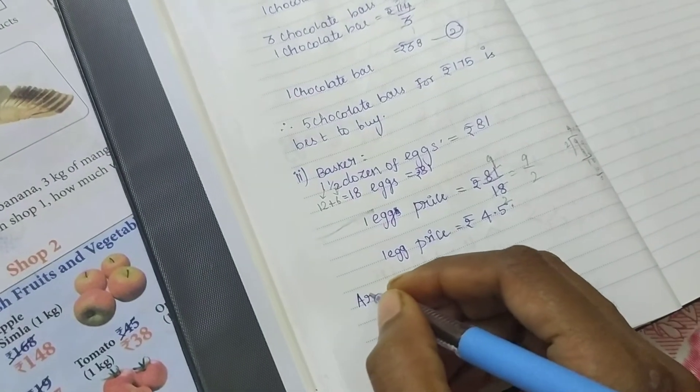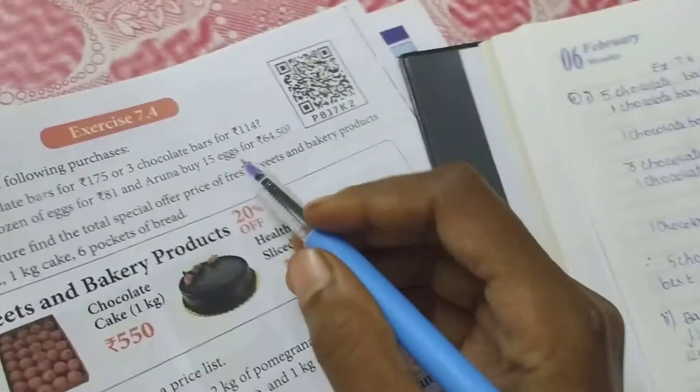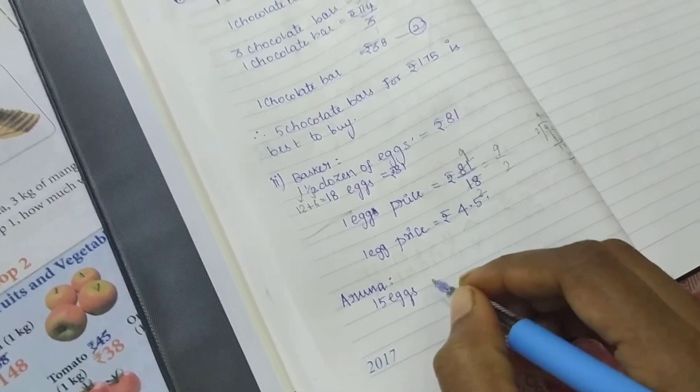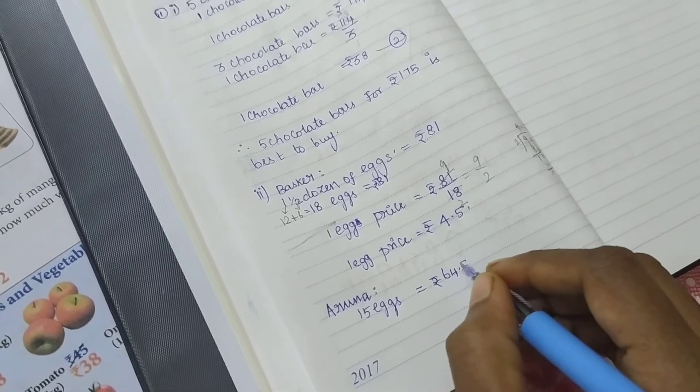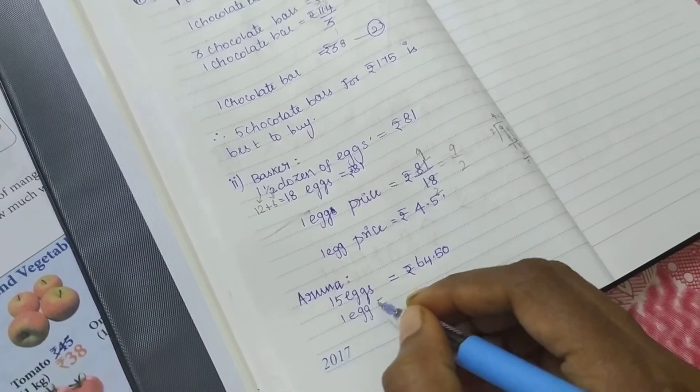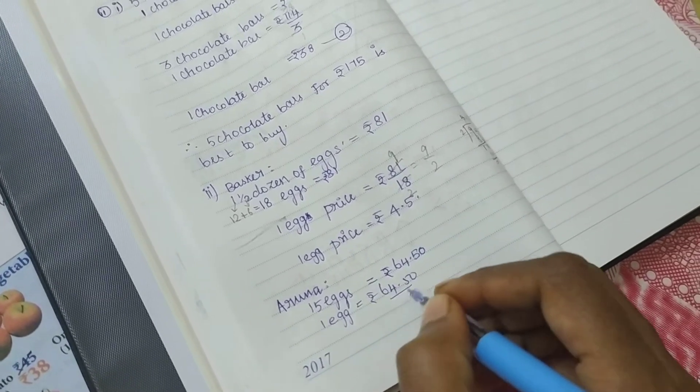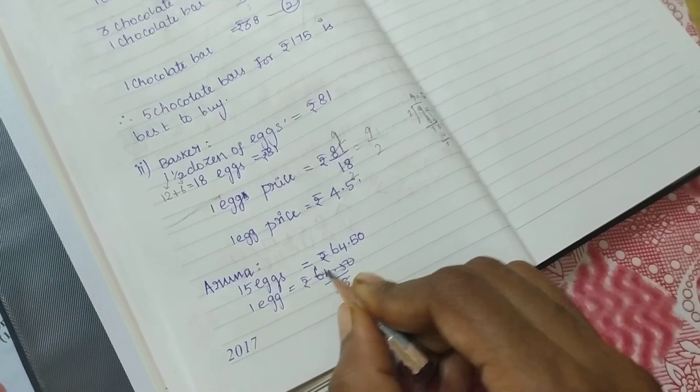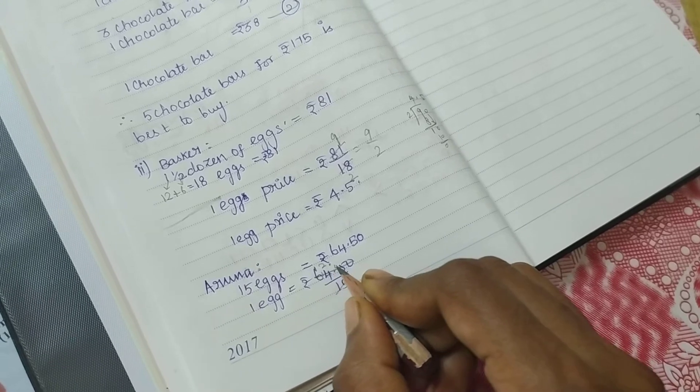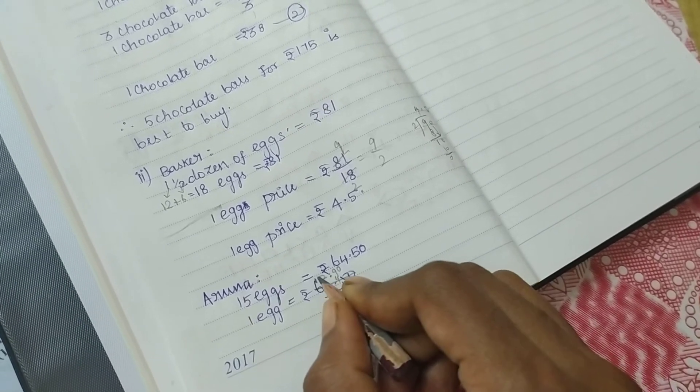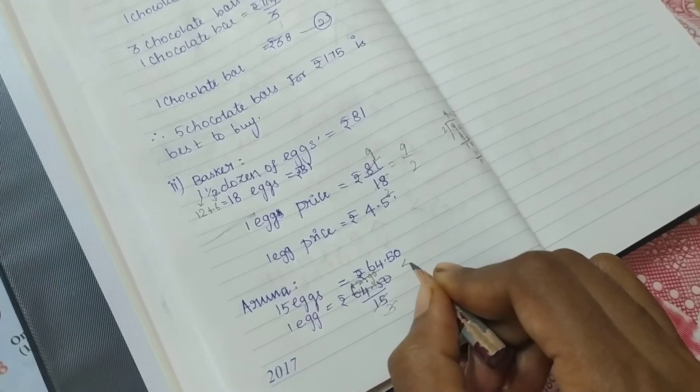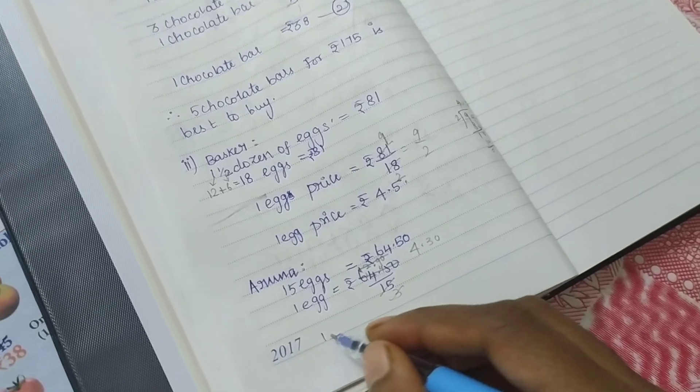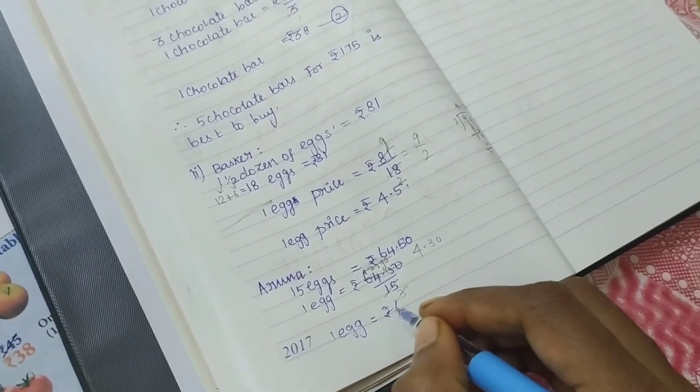Now for Aruna. Aruna buys 15 eggs for 64.50 rupees. One egg is 64.50 divided by 15. Canceling in the 5 times table: this becomes 4.3. So one egg equals 4.3 rupees for Aruna.